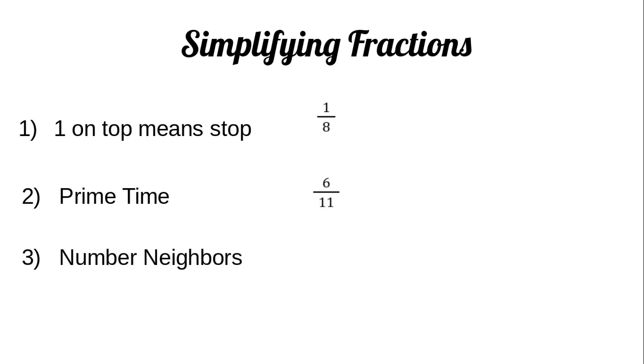The last one is number neighbors. For this, if you have a number line or graph, this is when numbers are back to back. The top number would come first on the number line and then the bottom number would come second. So 14, 15 - those are number neighbors on the number line, so this cannot be simplified.